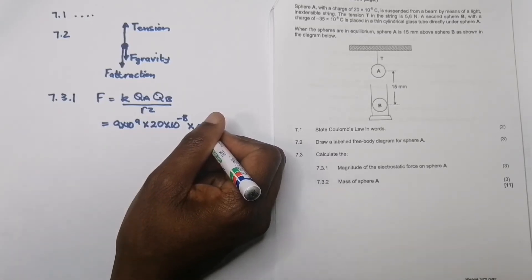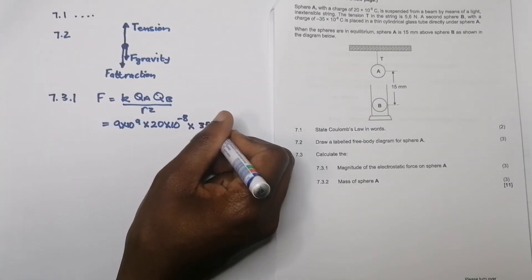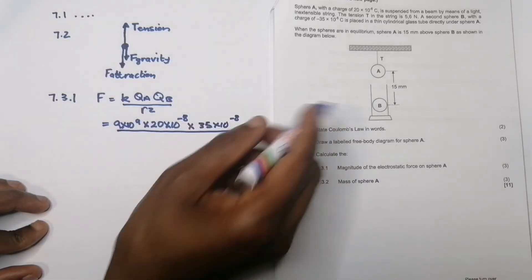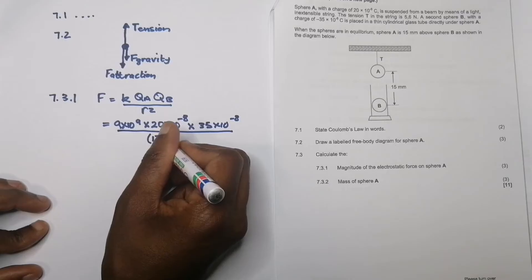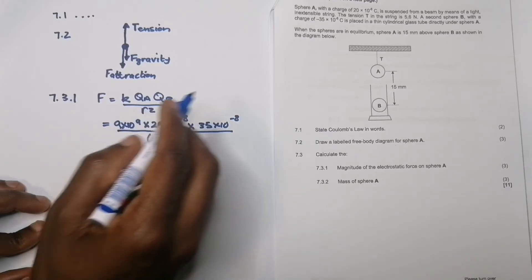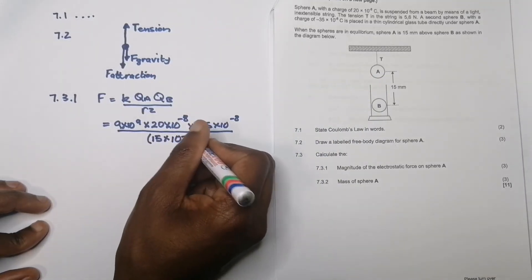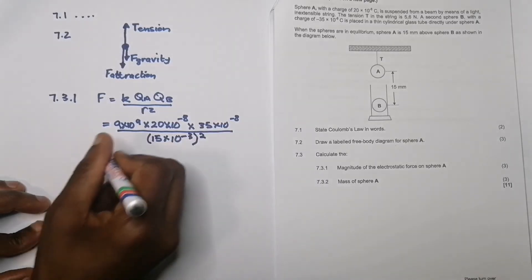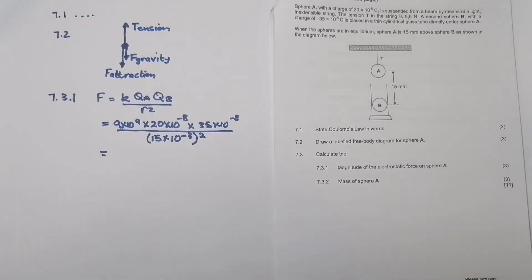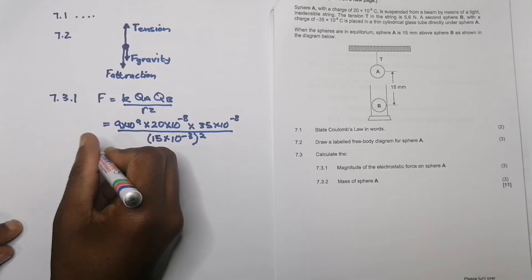This is 35 times 10 to the power minus 8, divided by the distance between them, that's 15 millimeters. Please note, for those who haven't watched our video on electrostatics, milli means you divide by a thousand or times 10 to the power minus 3, and remember we need to square that. I get an answer of 2.8, so the force is 2.8 newtons, and we know it's that force of attraction going downwards.